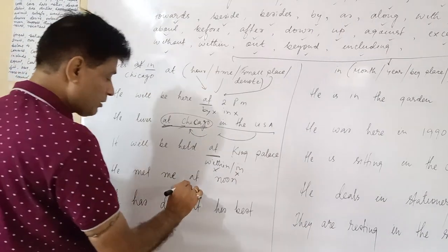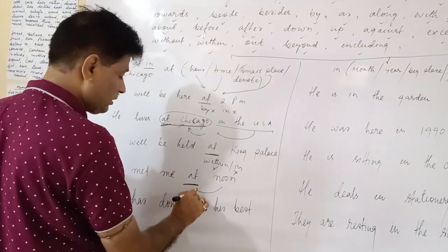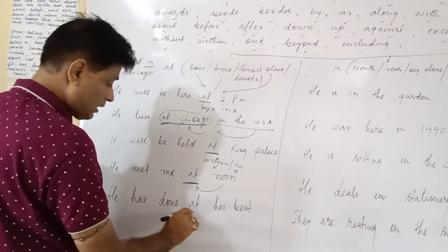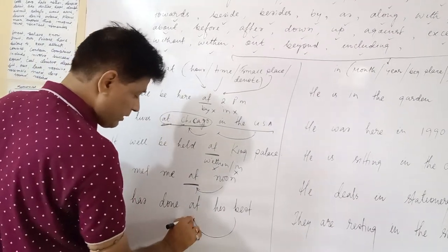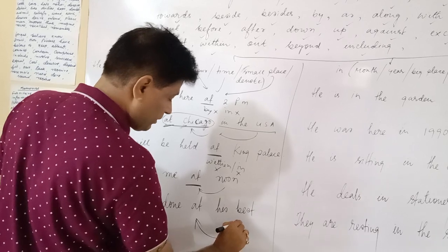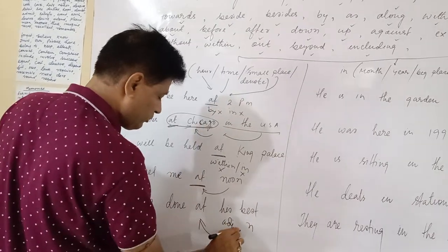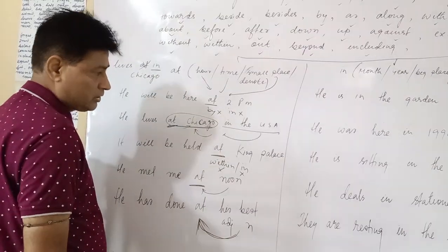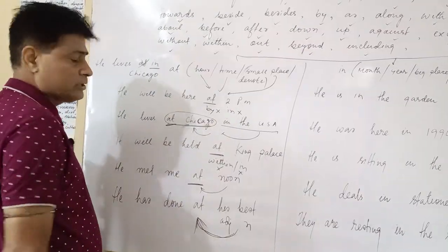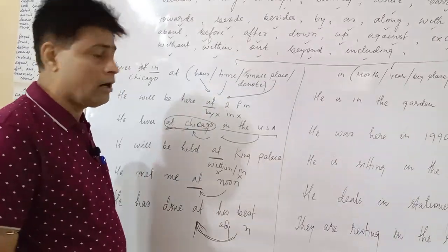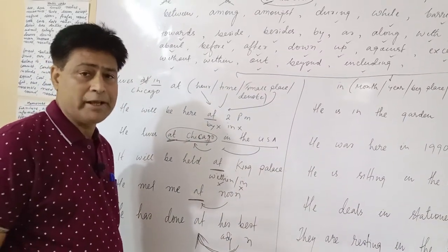He met me at noon, denoting time. He has done it at his best. Remember, if any noun followed by any adjective, then you have to use at as preposition. So at is used in the case of time or denoting small place.